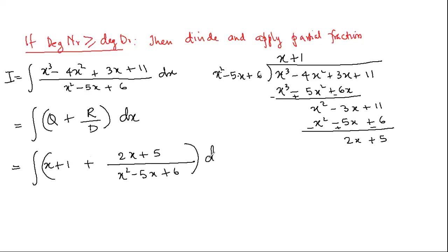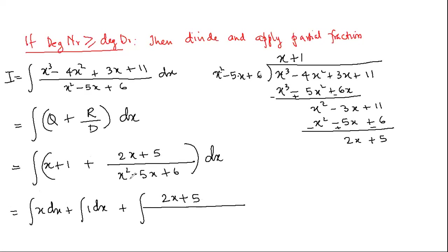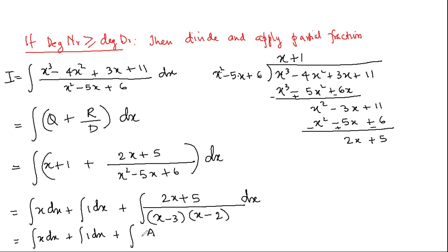Write the integrand as: quotient + remainder/divisor = (x + 1) + (2x + 5)/(x² − 5x + 6). Factorize the denominator: x² − 5x + 6 = (x − 3)(x − 2). Since the degree of (2x + 5) is less than the denominator and it has linear factors, apply partial fraction: A/(x−3) + B/(x−2).